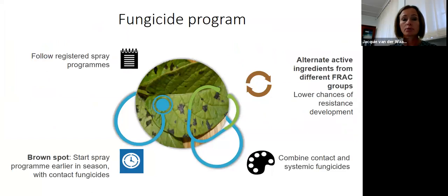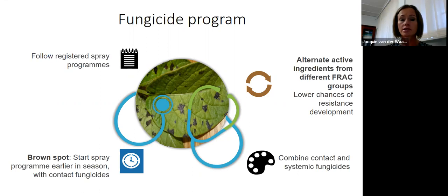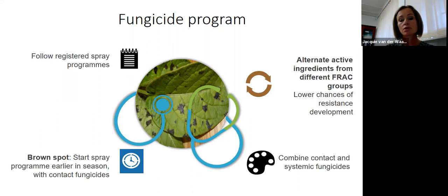If following a fungicide program, always follow registered spray programs and do not deviate from them. With brown spot, it is advisable to start spraying earlier in the season than for early blight because Alternaria alternata can infect younger plants. Critically, alternate active ingredients from different FRAC groups — this lowers the chance of resistance development, particularly important given that resistance is already present in Alternaria alternata. It's also important to combine systemic and contact fungicides, ensuring it follows the registered spray program.